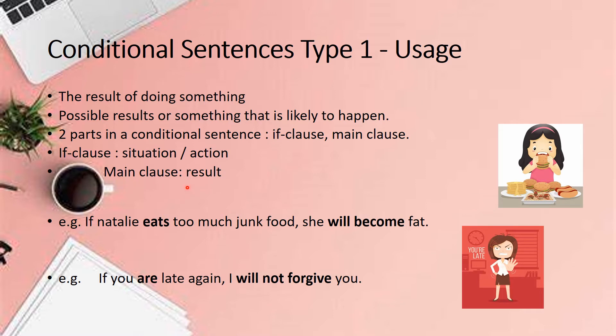Let's look at the first example: If Natalie eats too much junk food, she will become fat. Becoming fat is very likely the result of eating too much junk food, and it is quite possible to happen, though it is not definite. So we use the first type conditional sentence here.